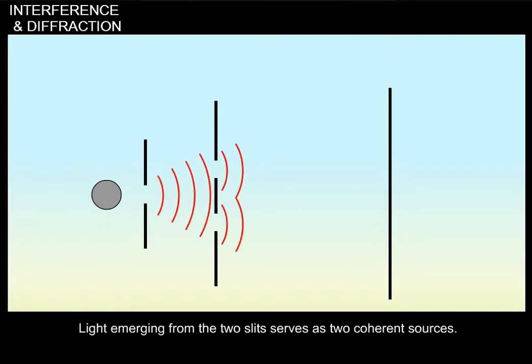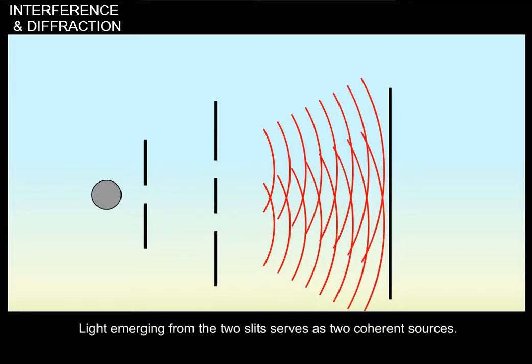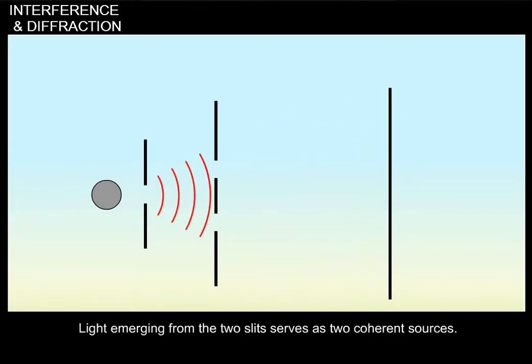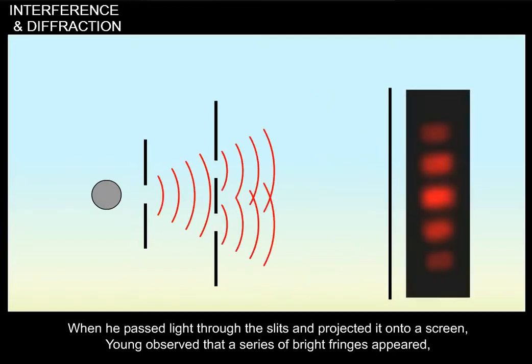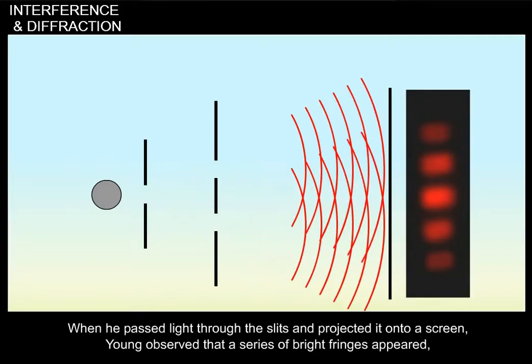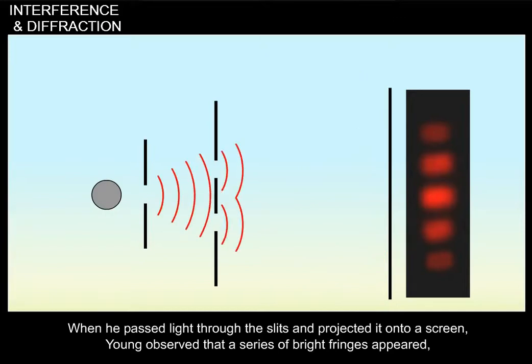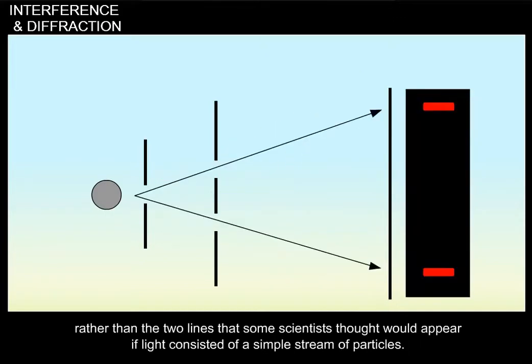Light emerging from the two slits served as two coherent sources. When he passed light through the slits and projected it onto a screen, Young observed that a series of bright fringes appeared, rather than the two lines that some scientists thought would appear if light consisted of a simple stream of particles.